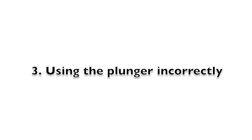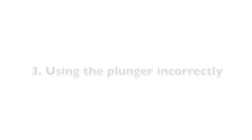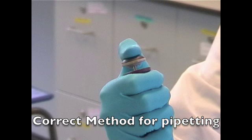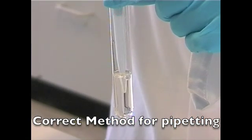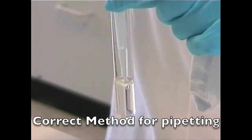Section 3: Using the plunger incorrectly. The correct method for pipetting is to depress the plunger to the first stop or point of resistance, immerse the tip in the liquid, and slowly release the plunger to its starting point.